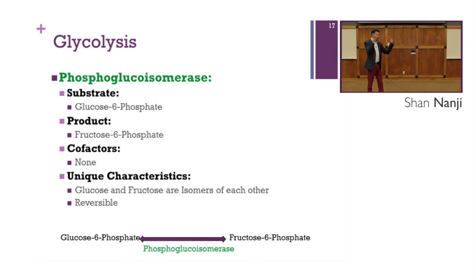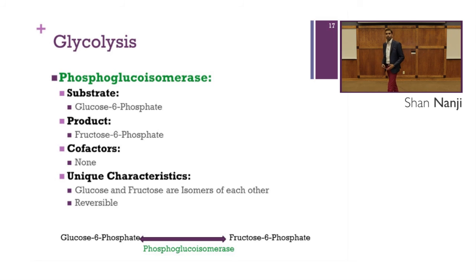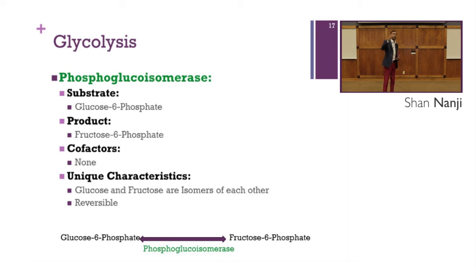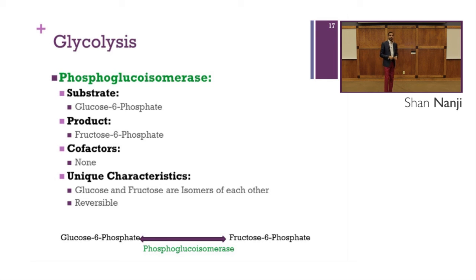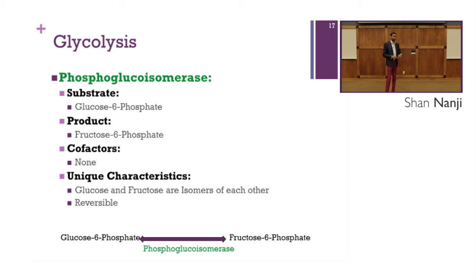Next in glycolysis is phosphoglucoisomerase. The substrate is glucose 6-phosphate and the product is fructose 6-phosphate. No cofactors are required. This enzyme is named phosphoglucoisomerase because glucose and fructose are isomers of each other. Unlike the previous two enzymes, this reaction is reversible.